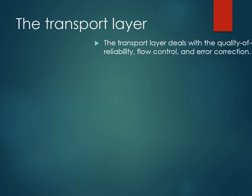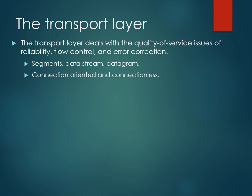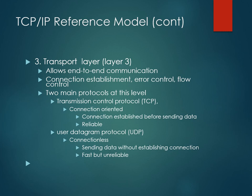The third layer is called the Transport layer. The Transport layer deals with quality of service issues: reliability, flow control, and error control — including segments, data streams, datagrams, connection-oriented and connectionless services. TCP, Transmission Control Protocol, is connection-oriented, and UDP, User Datagram Protocol, is connectionless. TCP provides end-to-end flow control between source and destination.